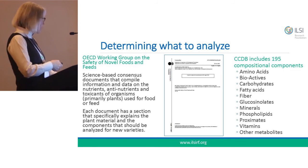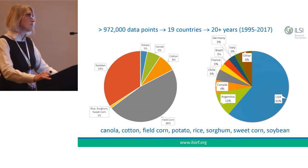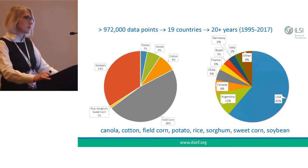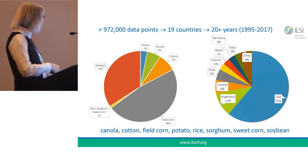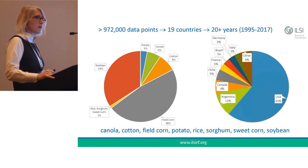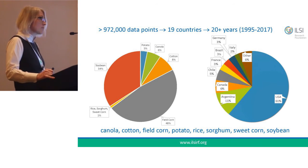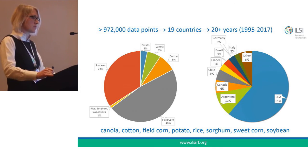To date, there are almost a million data points in the crop composition database, representing data from managed field trials in over 19 countries, accumulated over 20-plus years. The distribution of entries by crop shows an overwhelming amount of information about field corn and soybean, since those have been the two crops longest represented. We're working to improve and increase the number of crop species included.